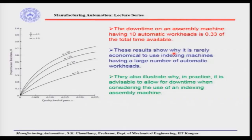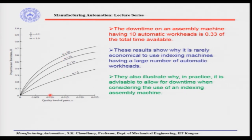However, if the quality level is to be increased — for example, from 0.01 to 0.005 — the cost will be roughly twice. We have seen a curve showing that depending on the number of machines n = 5, 10, 15, and 20, more machines means a greater proportion of downtime. These results show why it is rarely economical to use indexing machines having a large number of automatic workheads, because larger the number of workheads, more will be the proportion of downtime. It is understood that more the number of machines, more will be the possibility of downtime. They also illustrate why in practice it is advisable to allow for downtime when considering the use of an indexing assembly machine — sometimes we may allow this downtime rather than defective parts going inside and spoiling the machine.